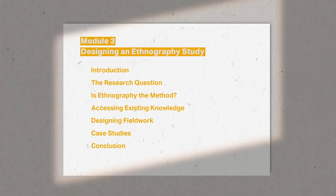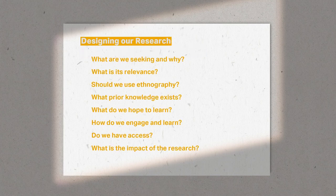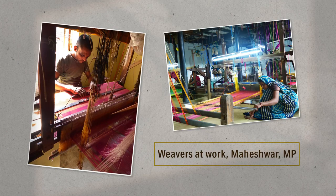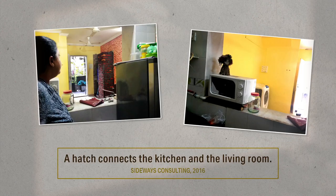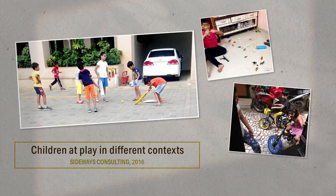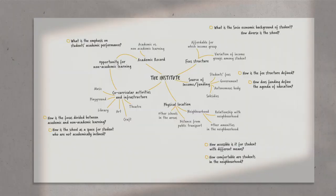With module three, we take our first step into the practice of ethnography. This starts with designing our research — what should our research be about, what people, places and phenomena should we include in our study, and how can we learn from them? We reflect upon these questions in order to develop a roadmap for our research. For each step of designing our research, we have examples and case studies from different areas, including product design, brand strategy, service design and communication.